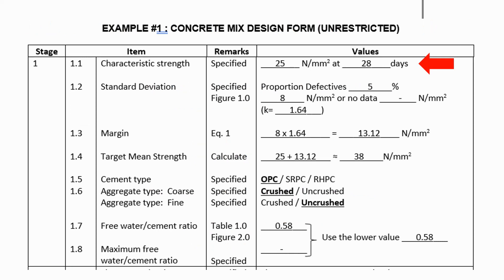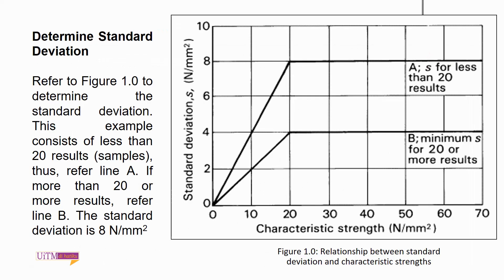By referring to the parameters given in table Q1, fill all specified spaces such as the characteristic strength at 28 days, the proportion defective, the constant K, and refer to figure 1.0 in the appendix to get the standard deviation. This example consists of less than 20 results, thus refer to line A. If there are 20 or more results, refer to line B.